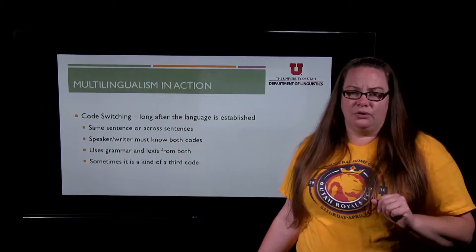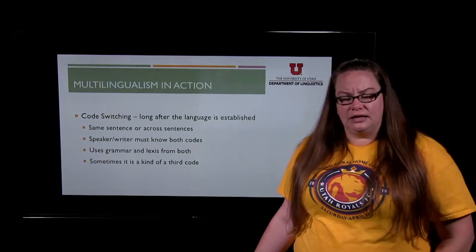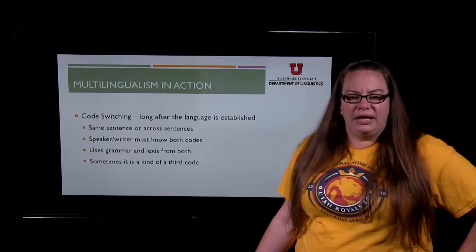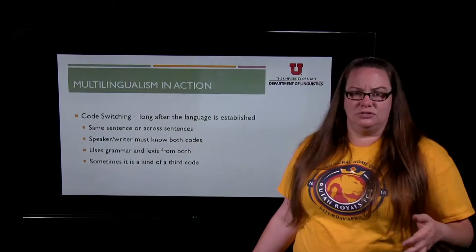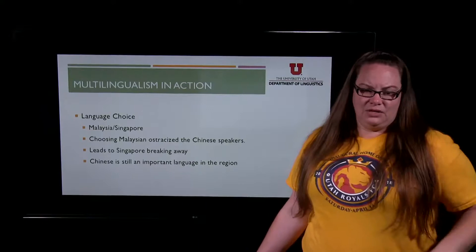Code switchers can use both the grammar and the lexis — the word choices — from both languages and interchange them. Sometimes we see it emerge as a kind of third code that doesn't actually match the grammar or lexis of either language but starts to have its own, developing into a third code. We often see the third code more in writing. People who code switch are able to do so because they have very high knowledge of both languages — that's necessary for code switching.